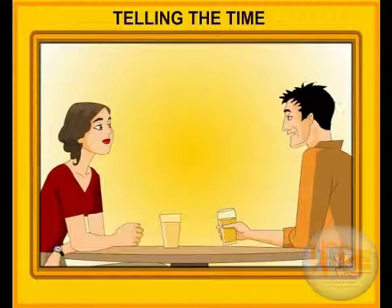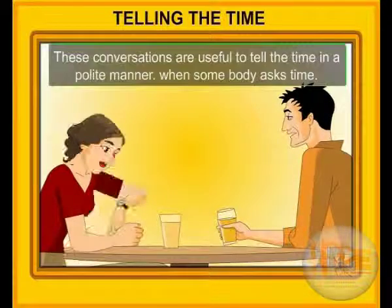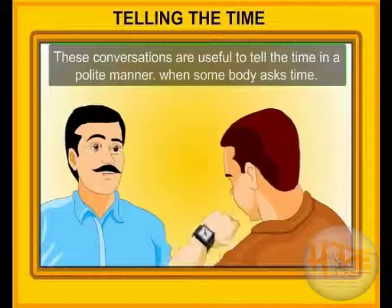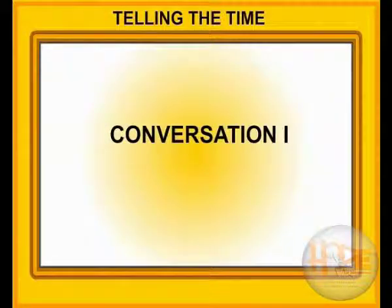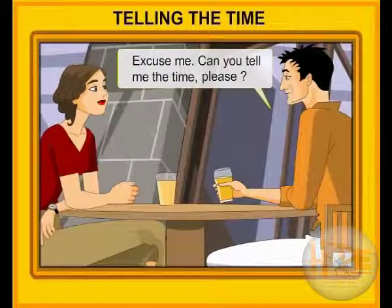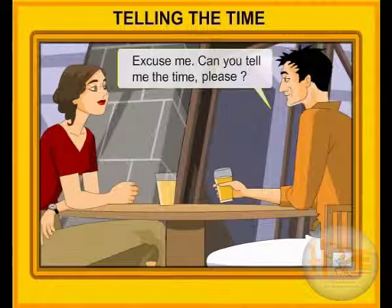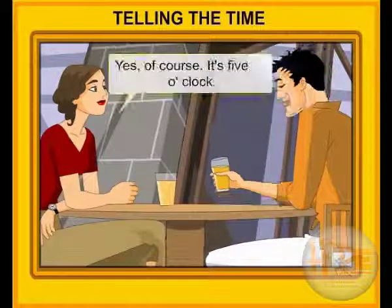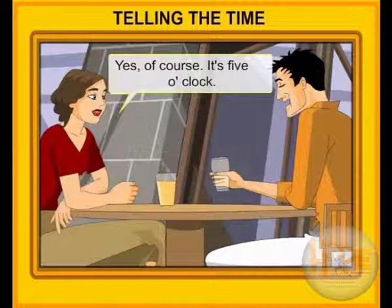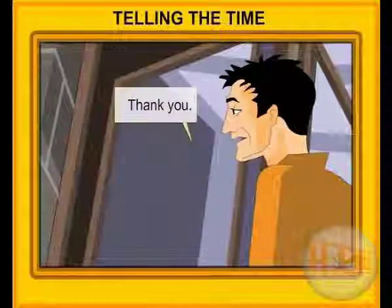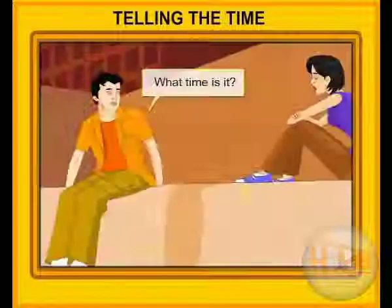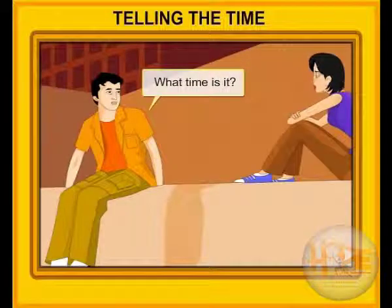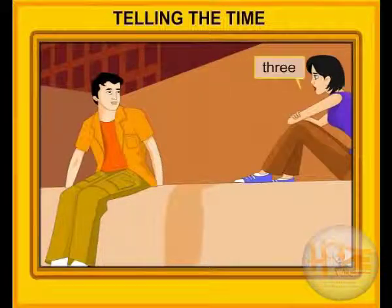Telling the time. These conversations are useful to tell the time in a polite manner when somebody asks the time. Conversation 1: Excuse me, can you tell me the time, please? Yes, of course. It's 5 o'clock. Thank you. No problem. Conversation 2: What time is it? 3. Thanks.